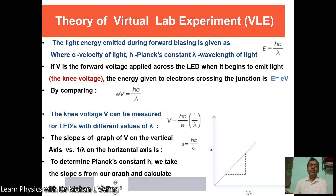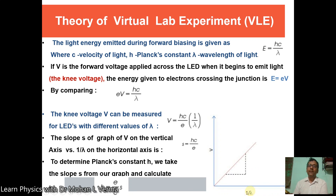If we apply the forward voltage across the LED when it just begins to emit light — meaning at the knee voltage — the energy given to electrons crossing the junction is E = eV. This is a simple mathematical term and is commonly used. By comparing the two relations E = hc/λ and E = eV, we get eV = hc/λ.